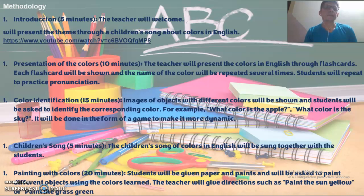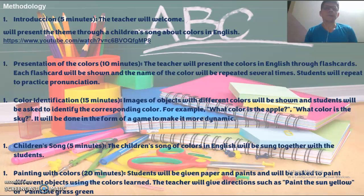Step 4: Children's song, five minutes. All the colors in English will be shown together with the students. Step 5: Painting, two minutes. Colors will be shown together with different objects. For example, painting the sun in your paper yellow, and painting the grass green.